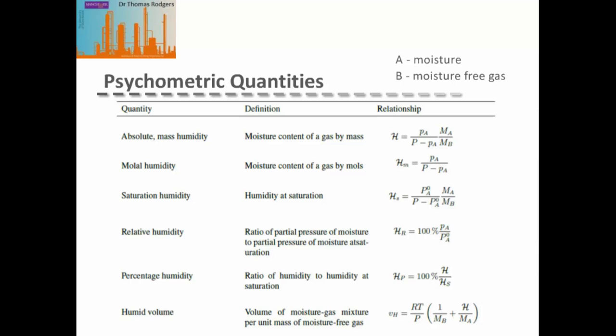The absolute humidity must be modified by the ratio of the molecular weight of the moisture to the molecular weight of the moisture-free gas to convert it into mass. It is also possible to express this as a molar humidity. The saturation humidity is defined the same as the absolute mass humidity, except that instead of using the actual vapor pressure of the moisture, we use the saturation vapor pressure.